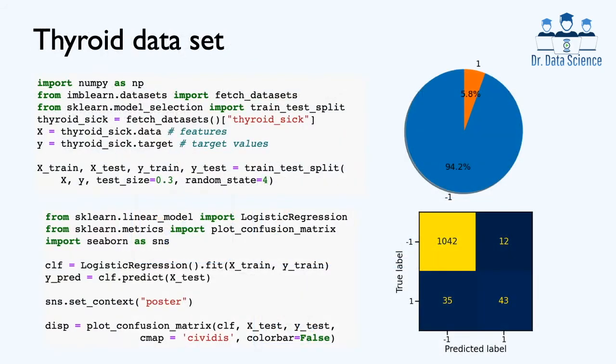To get a real feel of this problem, let's look at the thyroid data set again. We import numpy and the thyroid data set. We have the feature matrix as a two-dimensional array called x, and the target values y. We use train test split from scikit-learn to divide the data into training and test data sets, with test size at 30% of the entire data set.